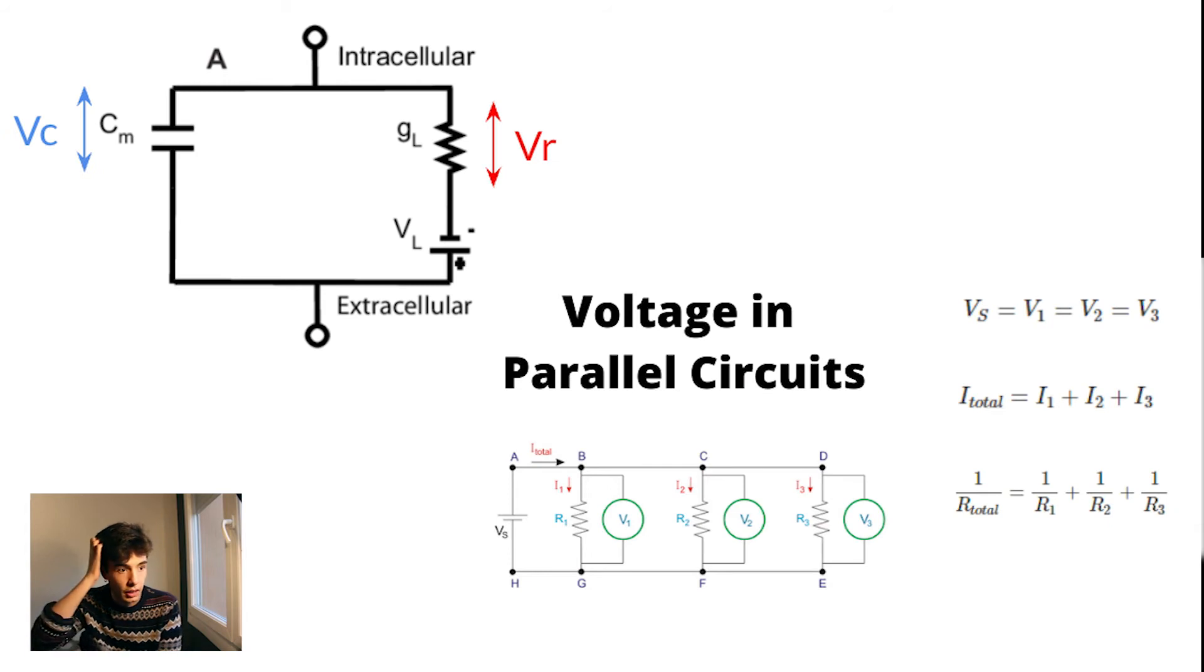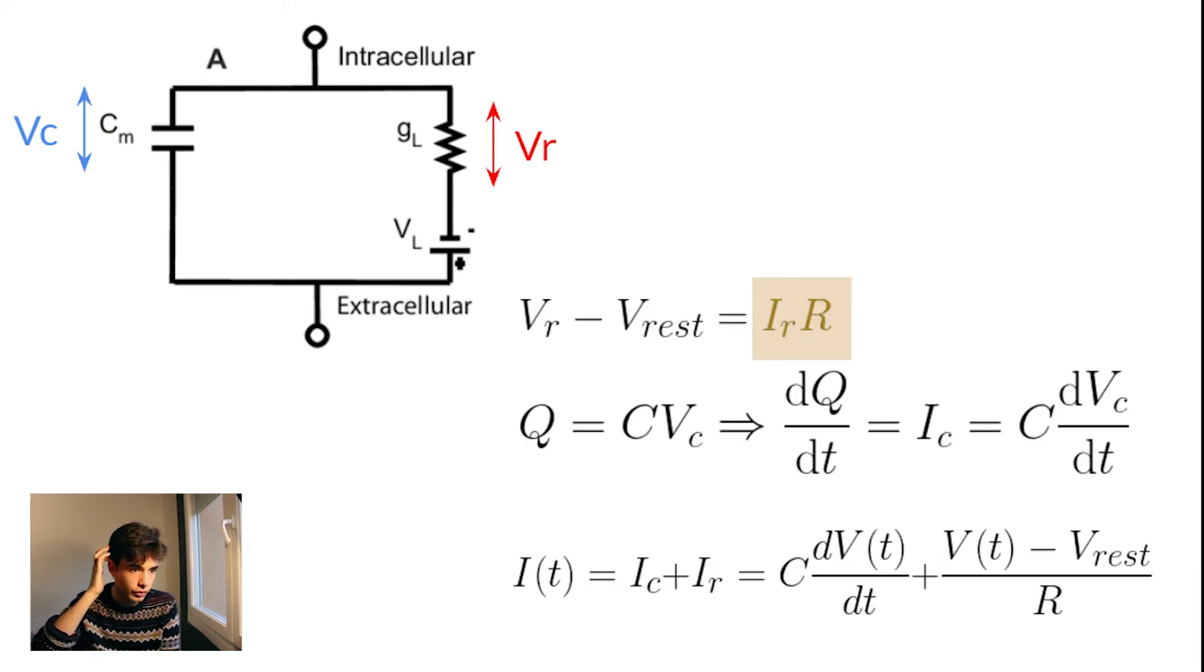Since it's a circuit in parallel, the total current would be the sum of the current in the left side part of the circuit and the current in the right side part of the circuit. We know that the voltage in the right side part of the circuit will be current times resistance because of Ohm's law, so we can isolate IR in this equation, and it gives us this.